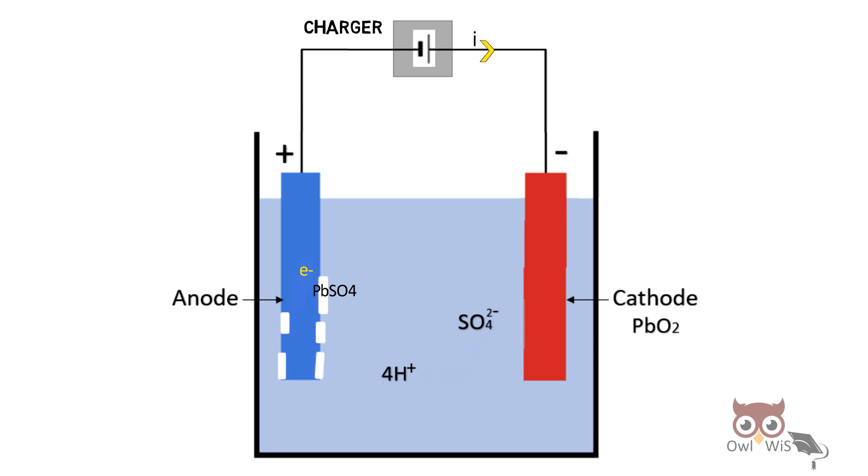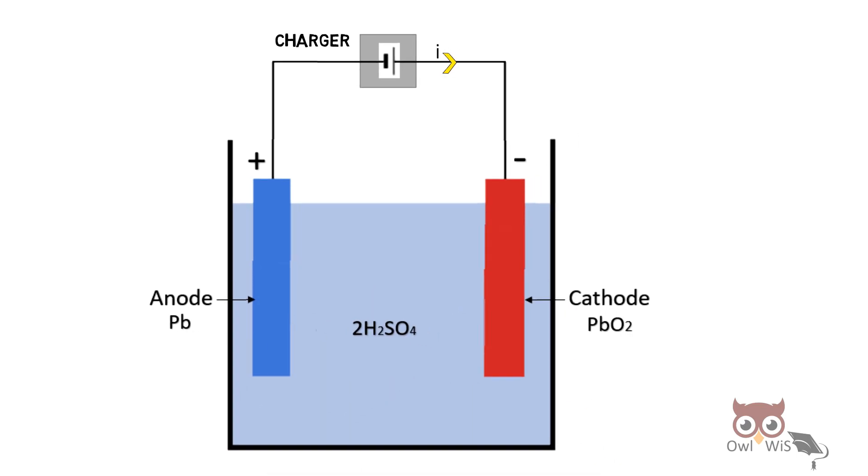At the anode, in the presence of electrons, the lead sulfate converts back to lead and sulfate ion. This sulfate ion, along with hydrogen and sulfate from the previous reaction, forms back sulfuric acid.